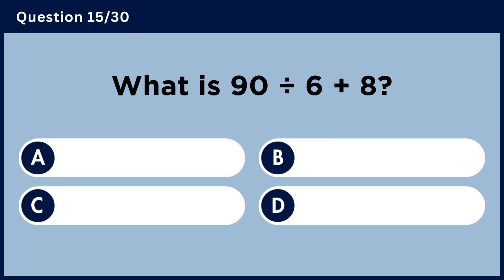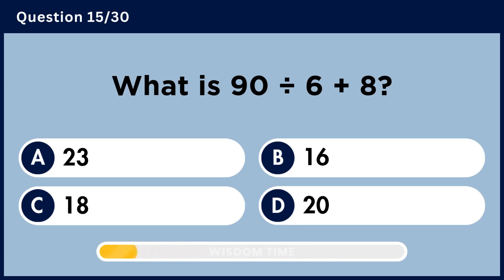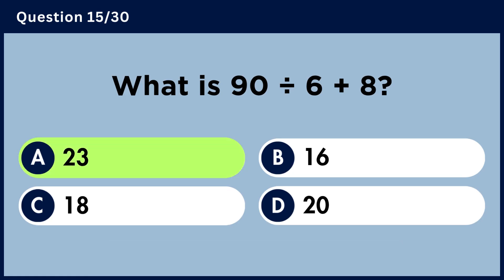What is 90 divided by 6 plus 8? Answer A, 23.